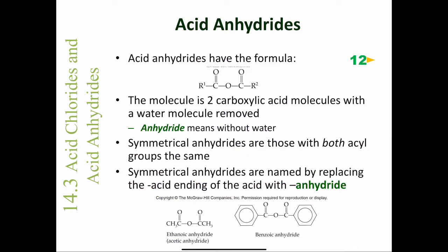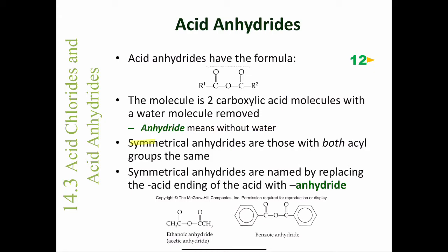Next, we'll look at acid anhydrides. Acid anhydrides have this general formula. The word 'anhydride' means without water. If you took two carboxylic acids — call them R1 and R2 — and added them together losing water, you could form an acid anhydride. The molecule is actually two carboxylic acid molecules with a water molecule removed. Symmetrical anhydrides are those where both acyl groups are the same.